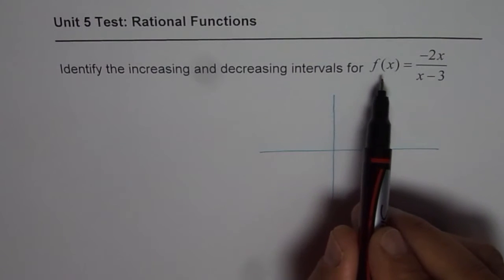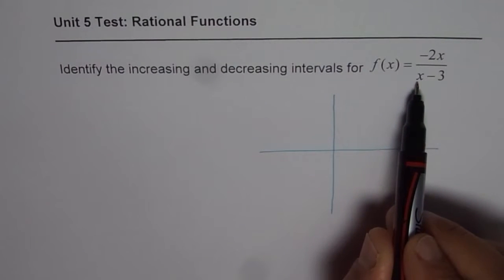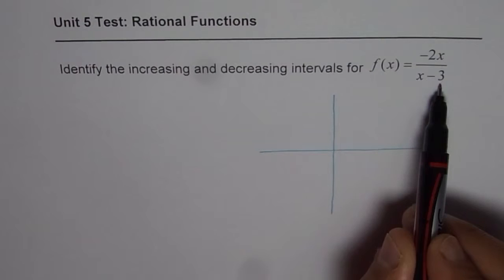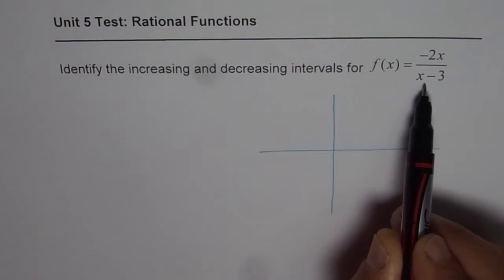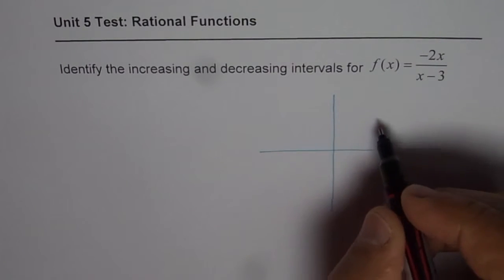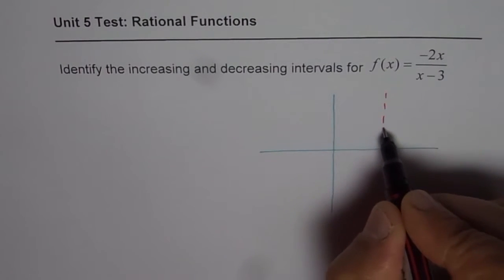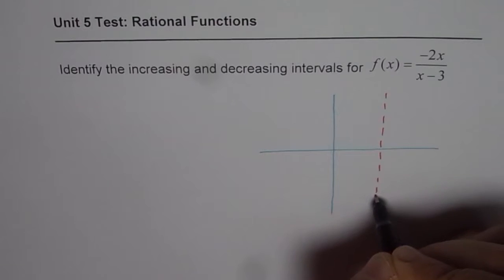When you see a rational function, the denominator x minus 3 in this particular case will be 0 for x equals 3. So vertical asymptote is at x equals 3. We have to draw one vertical asymptote and this will be at x equals 3.